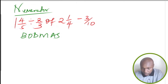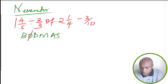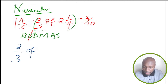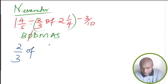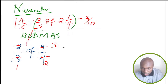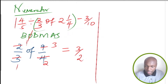With division, 'of', and subtraction, using BODMAS, 'of' should come first. So we evaluate 2 thirds of 2 and a quarter. Converting 2 and a quarter to an improper fraction gives 9 over 4. Since this is multiplication, we simplify: 3 divided by 3 is 1, 9 divided by 3 is 3, 2 divided by 2 is 1, 4 divided by 2 is 2. We end up with 3 over 2.